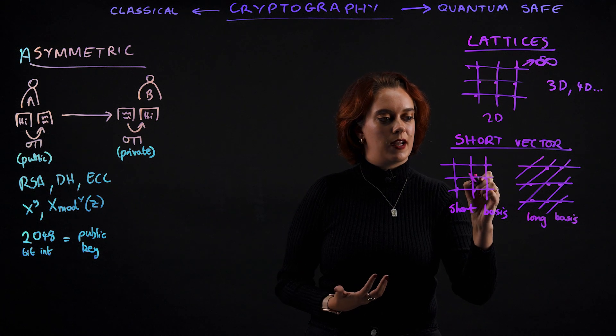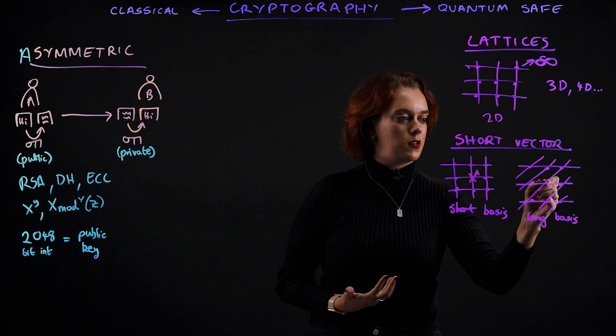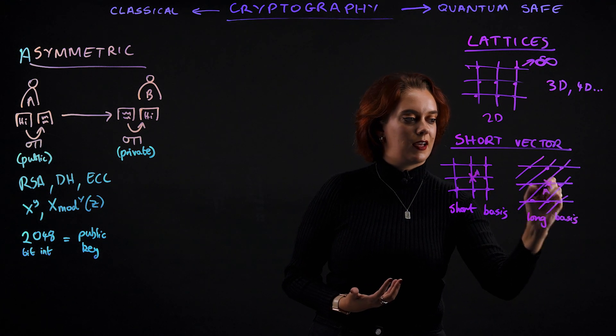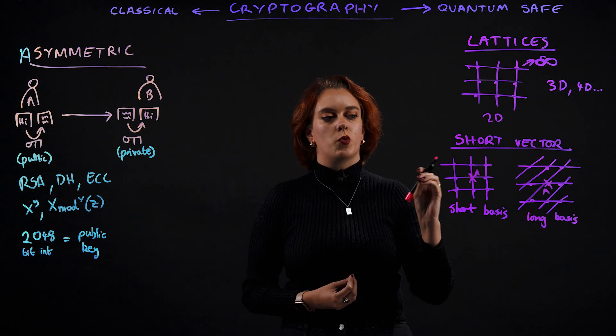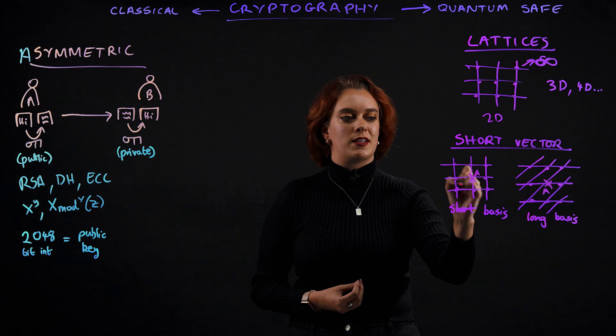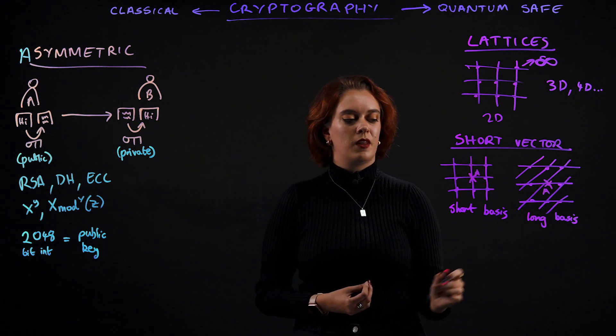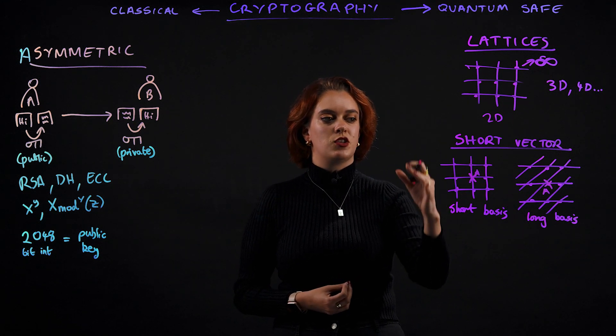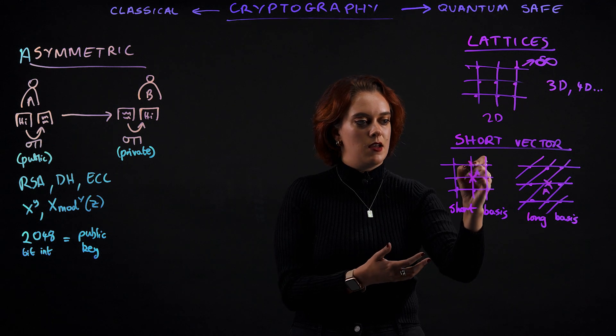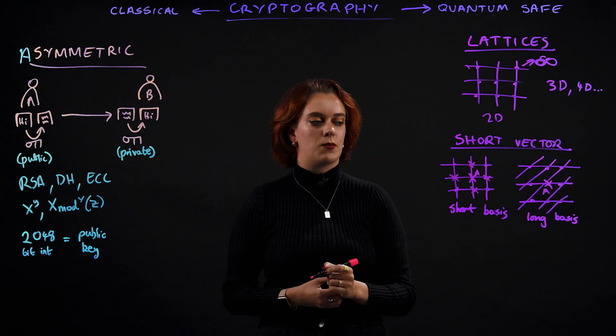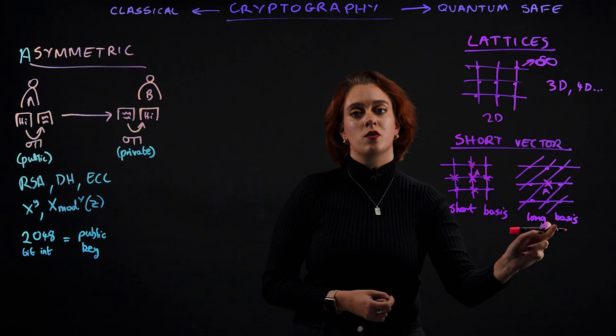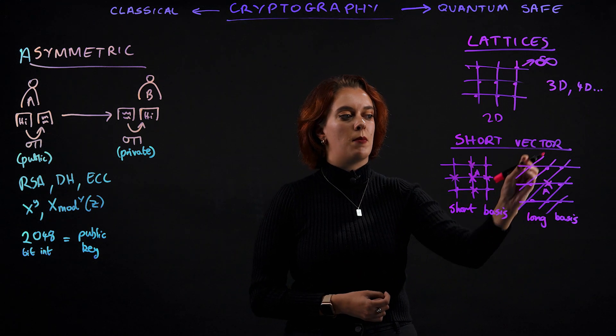So the short vector problem is essentially, let's say we have a point in the middle of this lattice here, or if we're representing it like this, it could look like that. And to solve this problem, we want to find the closest points to A on this lattice. If we're given a short basis, this can be quite easy to see where the shortest vectors are between the points. But if we're only given a long basis, this becomes much more complicated.